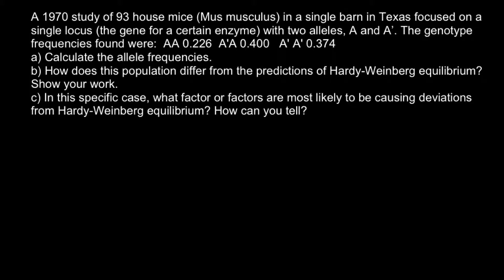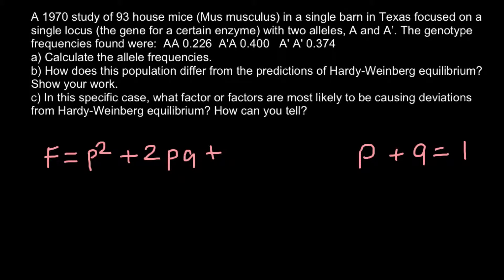Here is how we are going to solve this problem. First of all, let me write down the Hardy-Weinberg formula. F stands for the frequency of the three genotypes that can be made by two alleles. The first allele is P and the second allele is Q. All the alleles P and Q in the gene pool equal one. These two alleles can produce three genotypes: P² + 2PQ + Q², and all three genotype frequencies also equal one.